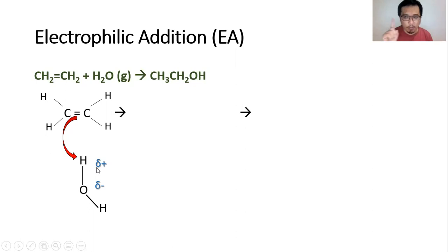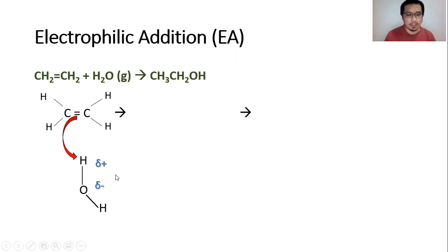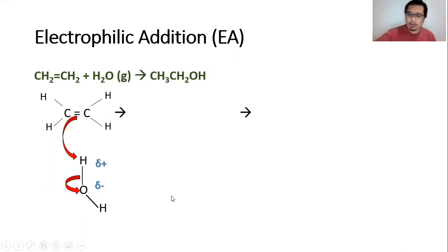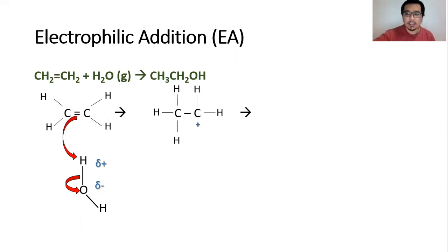Hydrogen can only form one bond, so if this hydrogen is about to form a bond with one of these carbons, the oxygen-to-hydrogen bond needs to be broken and sacrificed. What happens is you get a heterolytic fission, whereby both electrons from this O-H bond will be passed down to the oxygen. Now we look at what is actually produced as the intermediate.